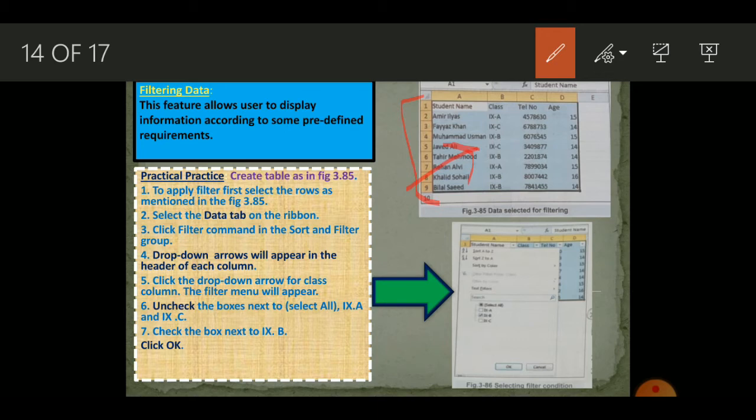To apply that, we will use the filter data command. You have to select this whole data, just like it appears in the screenshot, then you will go to select data tab on the ribbon and click the filter command in the sort filter group. From the drop-down menu, arrow will appear in the header of each column.